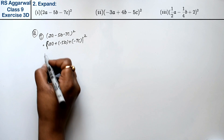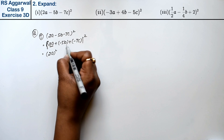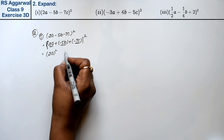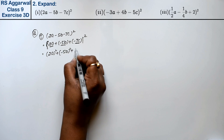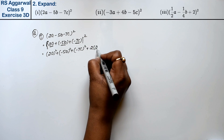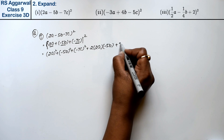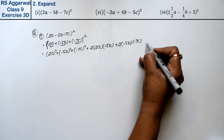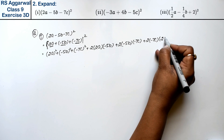This is in the middle bracket. Using the formula A square plus B square plus C square plus 2AB plus 2BC plus 2CA — where A is 2A, B is minus 5B, and C is minus 7C. So we get: plus 2 into (minus 5B) into (minus 7C), plus 2 into (minus 7C) into 2A.